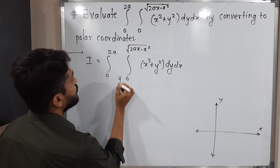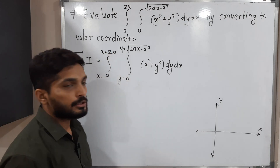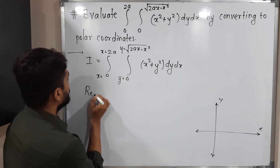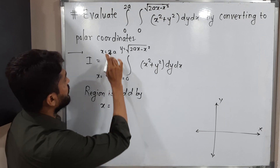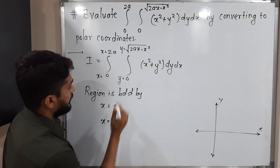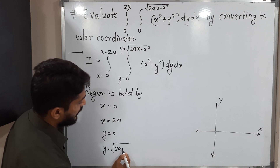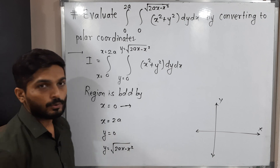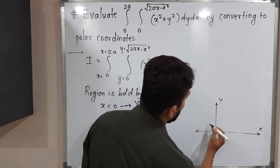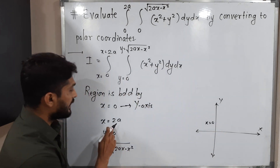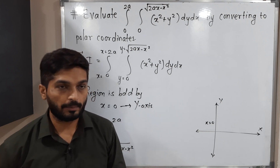The inner integration is with respect to Y, so these are the limits of Y. The outer integration is with respect to X, so these are the limits of X. The region is bounded by the curves: x = 0, x = 2a, y = 0, and y = √(2ax - x²). X = 0 is the Y-axis, and x = 2a is a line parallel to the Y-axis passing through 2a.